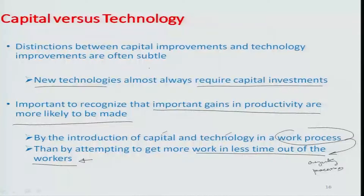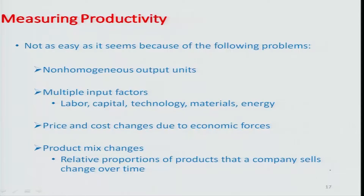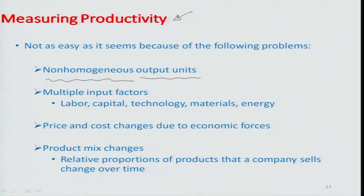Technology in this way helps get more work done in less time across different systems. However, measuring productivity is not a very easy task, because output is not always homogeneous. There are also multiple input factors involved in a work system — labor, capital, technology, materials, and energy — all of which have costs that vary in a competitive environment within a given economic zone with certain market forces.